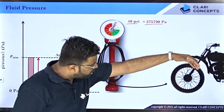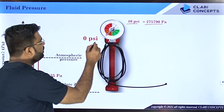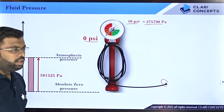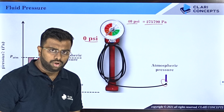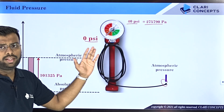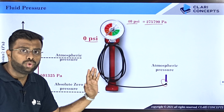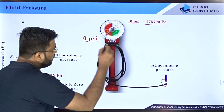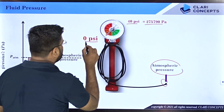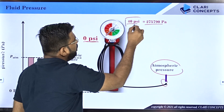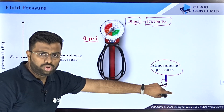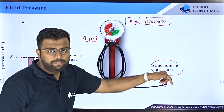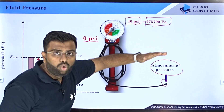Now when you remove the gauge from the tube, it will show you 0 Pascal. But the sensor is still open to atmosphere — so why is it showing 0 Pascal? It should give you the atmospheric value since it is open to atmosphere. But no — these devices are all measuring the pressure of the fluid keeping atmosphere as the reference. When I say keeping atmosphere as the reference, it means they are calibrated to measure atmospheric pressure as 0 Pascal. So this 275790 Pascal is the pressure inside the bike's tube over and above the atmospheric value.